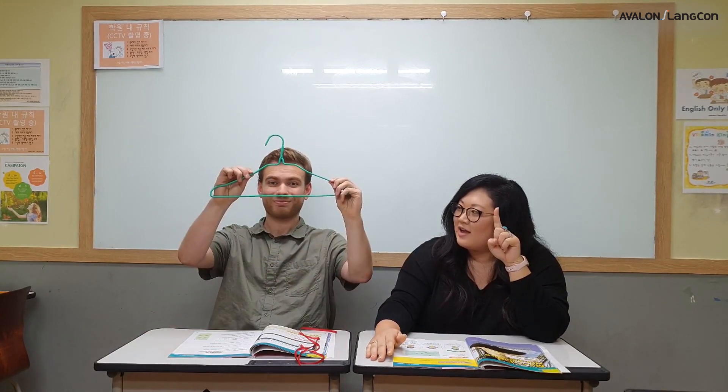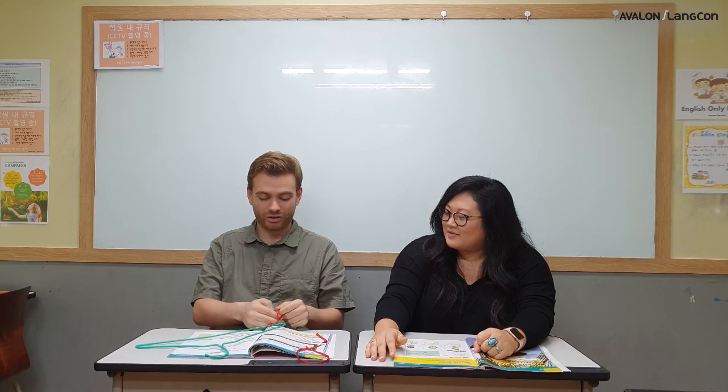For our experiment today we need three things. First we need two pieces of string. And then we need one wire hanger. Very good! Our first step is to tie the two pieces of string on each side of the wire hanger. Okay Chelsea teacher and I'm going to double knot them to make them extra strong.